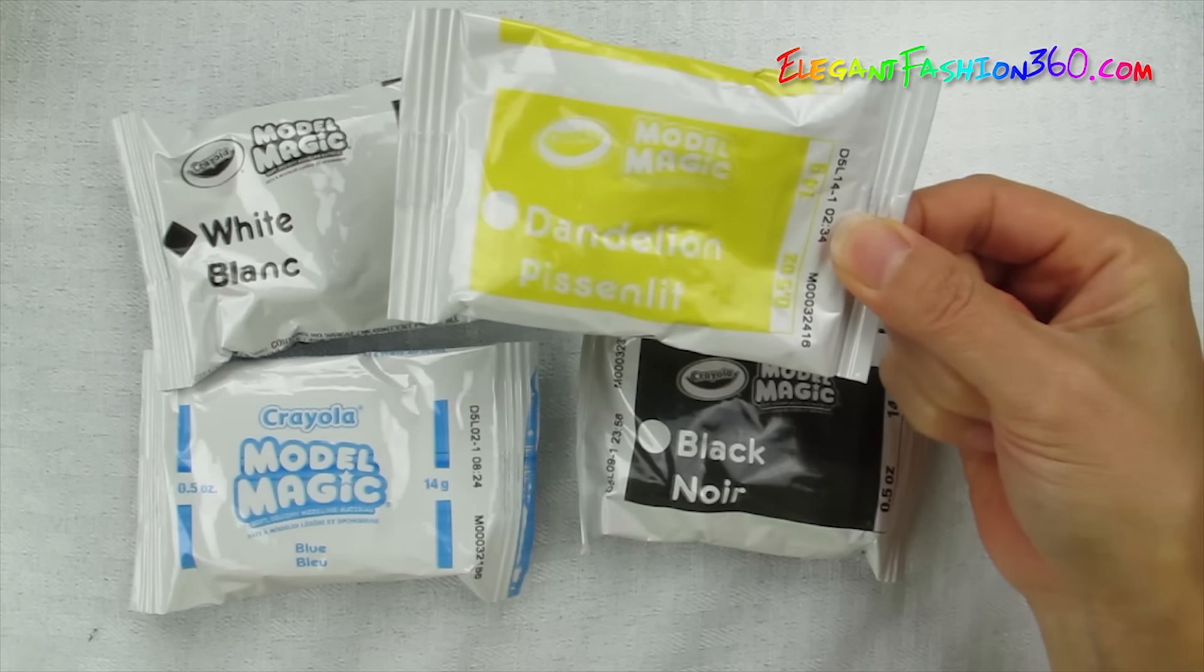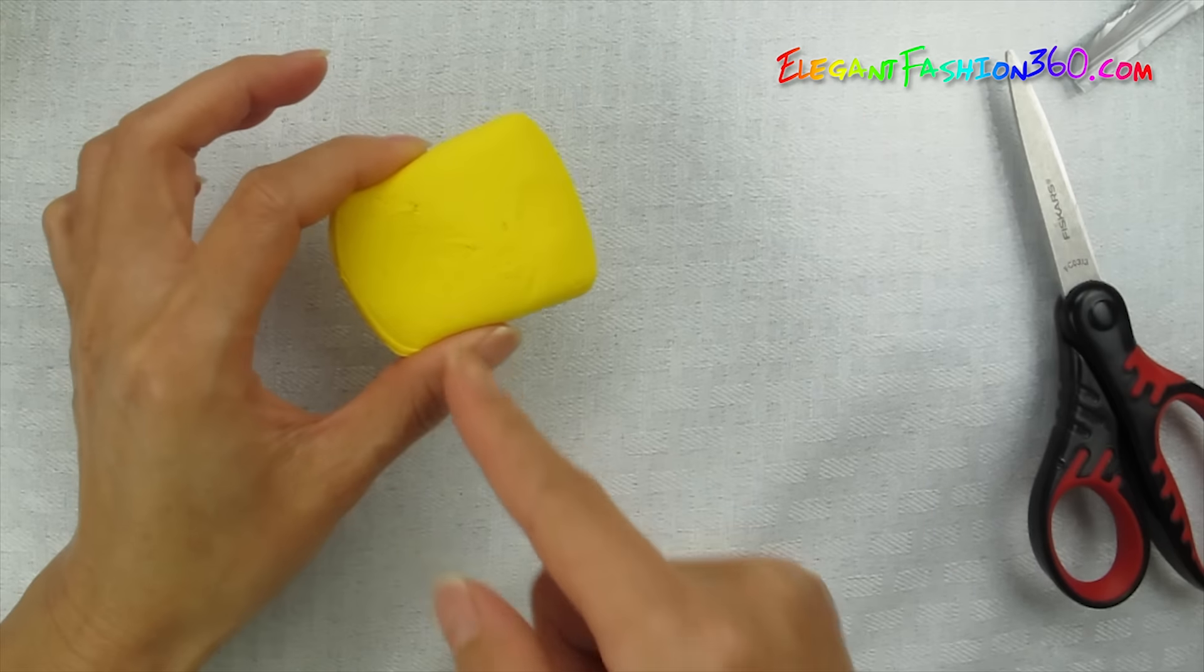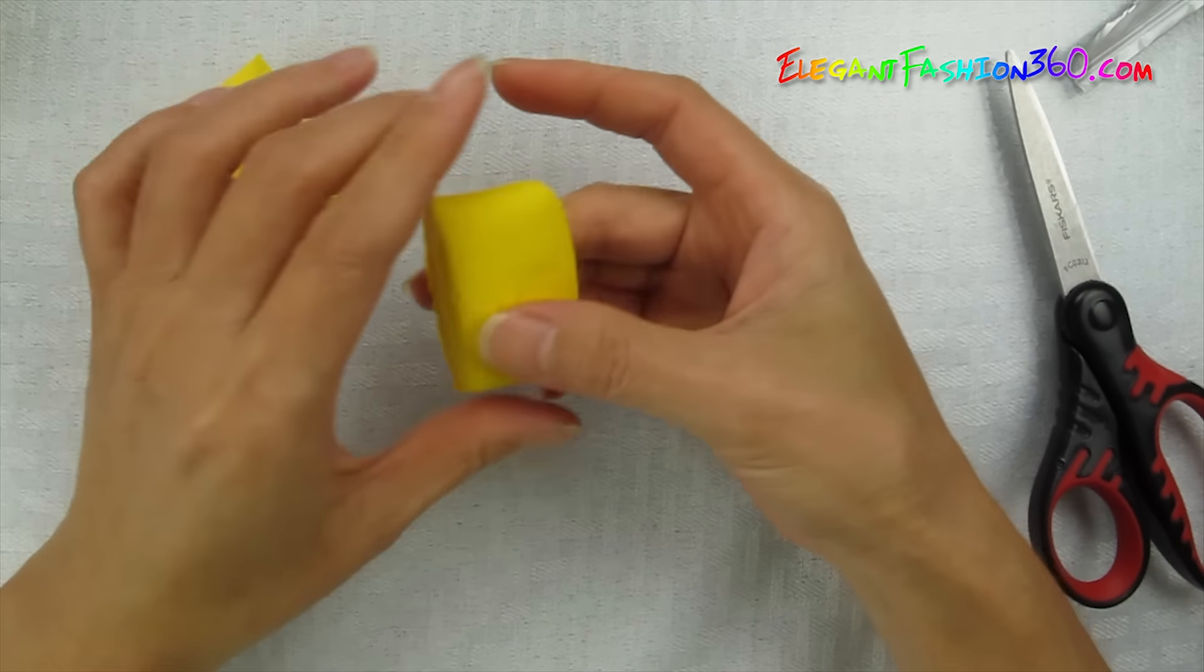Okay, first we're going to open this yellow pack to make its body. I'm going to try to see if I can make two, so I'm going to divide it into half. If you want to make a big one, you can just use this to make one.